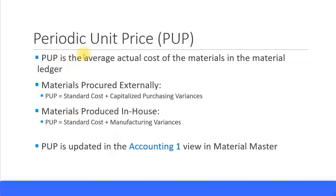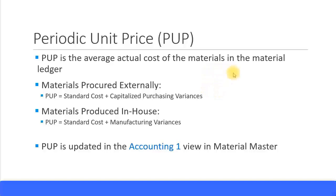The Periodic Unit Price, or PUP, is the average actual cost of the materials in the material ledger. Every period, as part of the period-end activities, you update the actual cost of the materials and you get the updated periodic unit price.